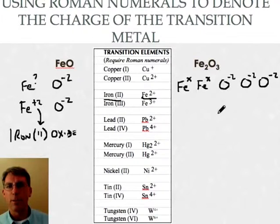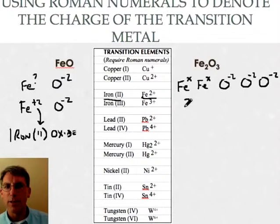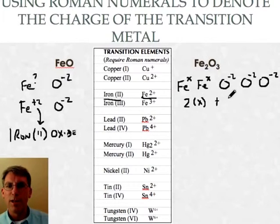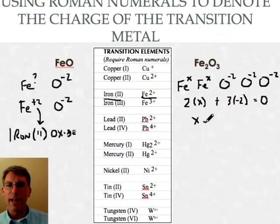So let's say we don't know what charge the two irons are going to take. We'll just call them X for the moment. But what I do know is that the total charge on this compound has to be zero. So I can set up a little algebra equation here and say that if I have two unknowns plus three negative twos and that whole thing needs to be zero then I can solve for X here and I can find out that X equals a positive three.